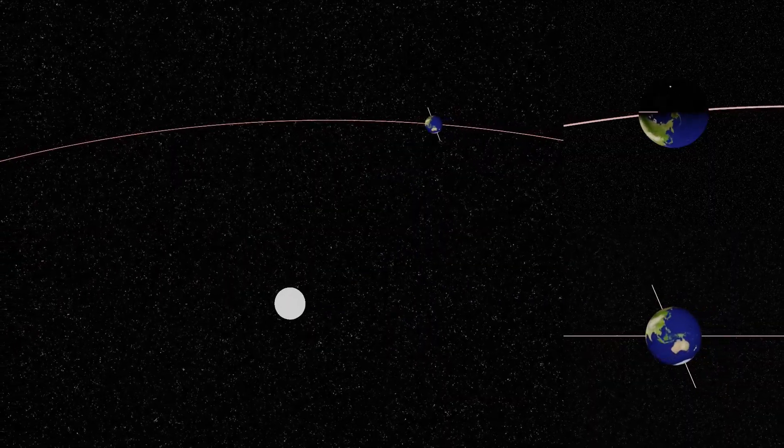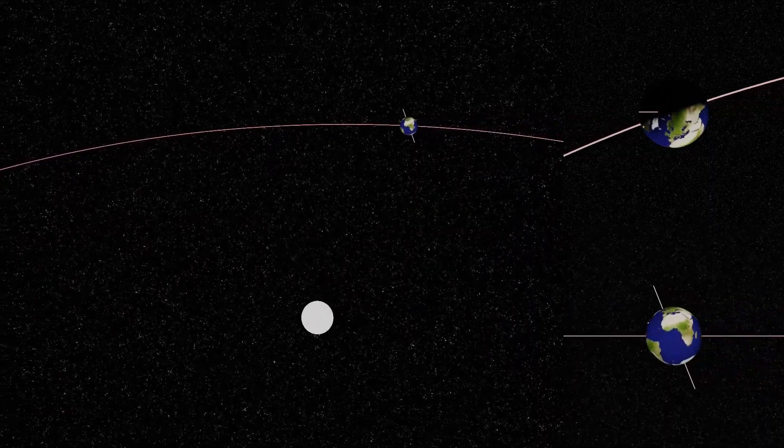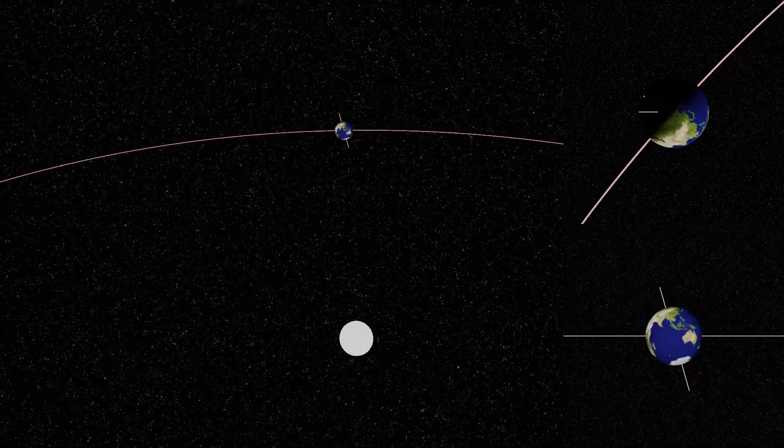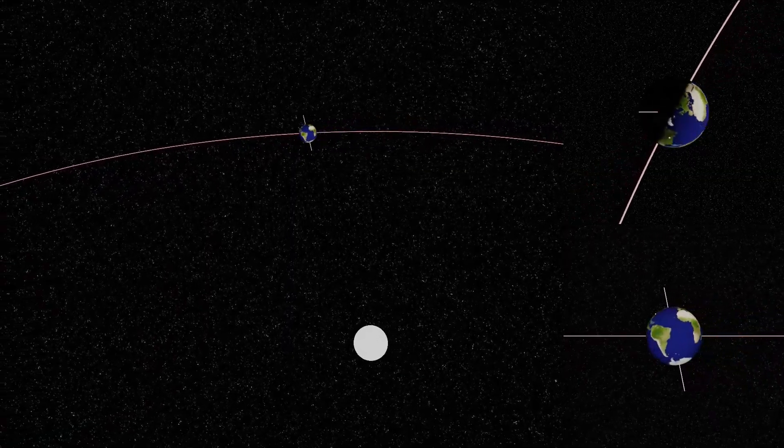Keep going. Now, the northern hemisphere starts leaning away from the sun, moving into October and November. Ottawa's days get shorter, and it gets colder.